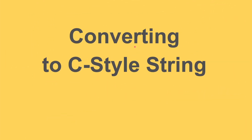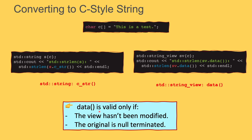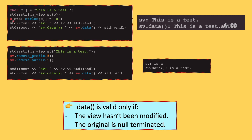If you have a string view, can you convert it back to a C-style string? If you have a C++ string, you can use the c_str() method to get a null-terminating C-style string. You can do something similar with string view by calling its data() method, and this works — it will return a C-style string. However, you have to be careful that data() returns a valid C-style string only if the view hasn't been modified and the original is already a null-terminating C-style string. If you modify the original to remove the null-terminating character, printing data() will show garbage at the end. And if you modify the view and then print data(), you'll also see unexpected output. So remember that data() is valid only if the view hasn't been modified and the original is null-terminating.